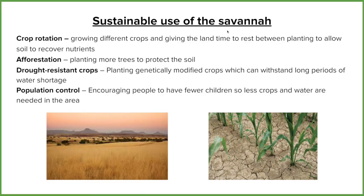Finally, population control. Many people in the savannah are nomadic, moving between locations depending on where animals are or where crops grow best. But increasing numbers of people are now settling in one location. With more people, you need more food and water. Population control is about educating people in the savannah on the advantages of a smaller family and providing resources so they don't need large families to work the farm — which ties in with crop rotation and drought resistant crops.